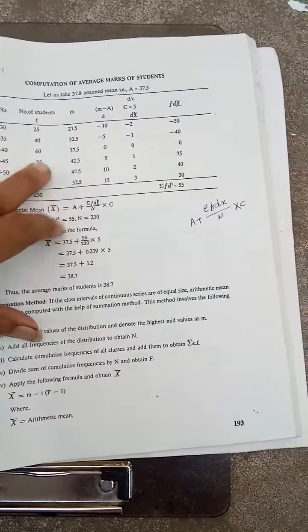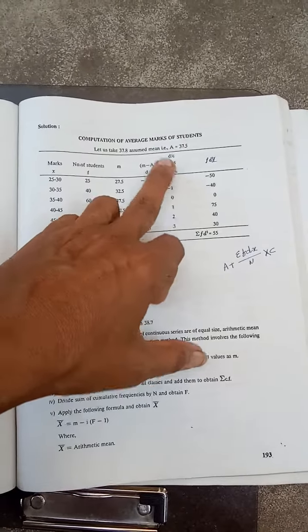Then I have taken assumed mean as 37.5. 27.5 minus 37.5 is equal to minus 10, minus 5, 0, 5, 10, 15.